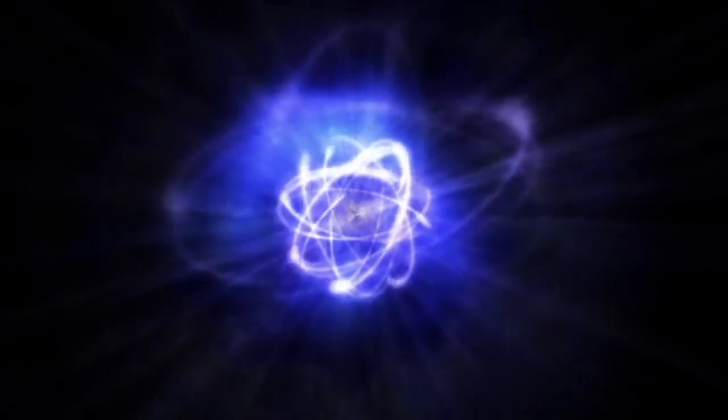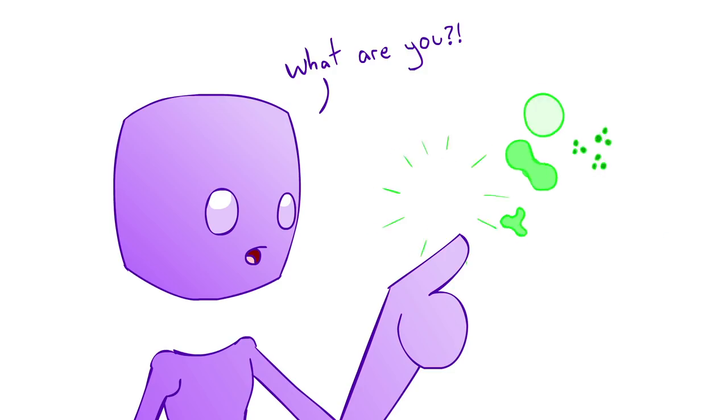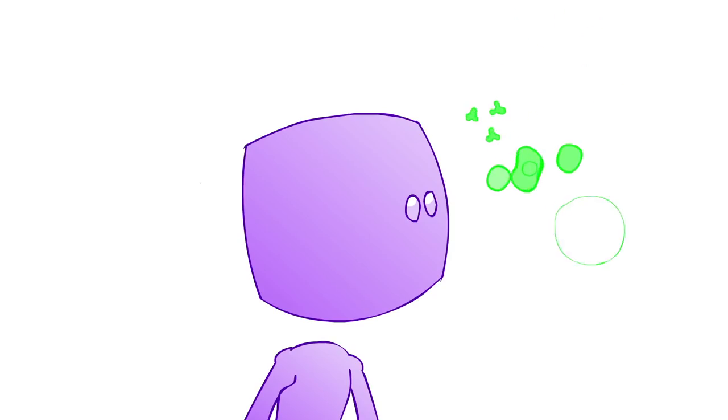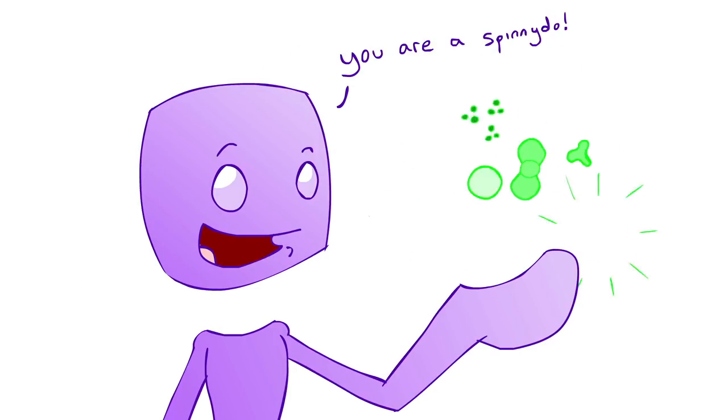Particles are called particles because they're too small to be seen by instruments we have in science at this time. What that means is that we don't really know what particles even are. If we knew what they were, they would not be particles anymore, they would be described.